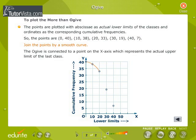Join the points by a smooth curve. The ogive is connected to a point on the x-axis which represents the actual upper limit of the last class.